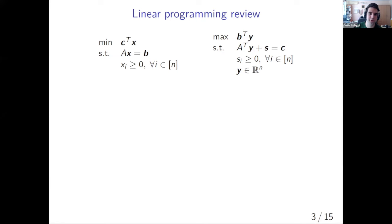First, I'm going to do a short recap of linear programming. As you see, here we have the primal linear program on the left-hand side, and its dual on the right-hand side. The most important takeaway is that on the left-hand side, you have this variable x. On the right-hand side, you have two variables, y and s. But actually, the important one is the s variable, which is of the same size as x, and it has the same non-negativity constraints as x.